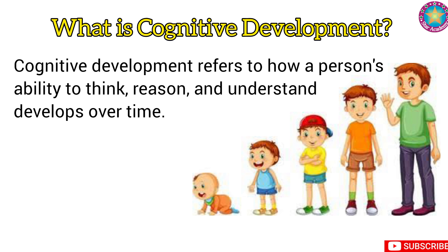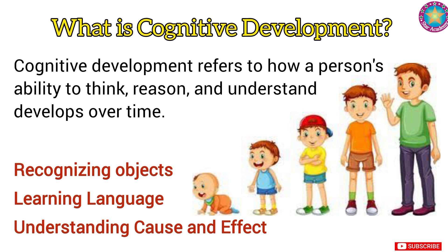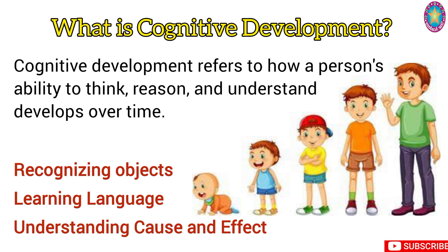This process begins at birth and continues through adulthood. During early childhood, cognitive development includes skills like recognizing objects, learning language, and understanding cause and effect. As children grow, they start developing more complex abilities like logical reasoning, critical thinking, and abstract ideas.